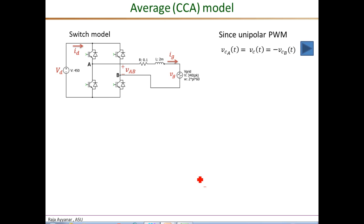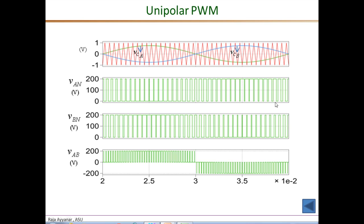By the definition of unipolar PWM, the two control voltages VCA and VCB are related by this expression. The control voltage for pole B is simply the negative of control voltage for pole A. So VCA is minus VCB. To put it into proper context, let's quickly look at these unipolar PWM waveforms.